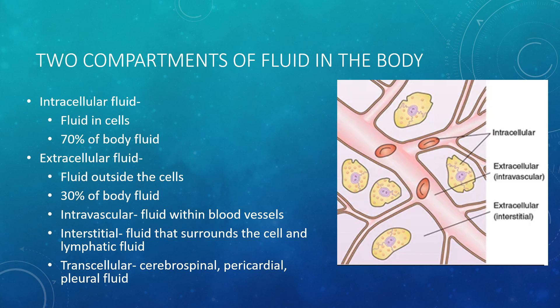Extracellular fluid is all the fluid outside of our cells and accounts for the other 30% of fluid. It can be broken down into three areas: intravascular fluid, or the fluid within our blood vessels; interstitial fluid, which surrounds tissue cells and includes our lymphatic system; and transcellular fluid, such as cerebrospinal fluid, pericardial fluid, pleural fluid, and intraocular fluids. Changes in extracellular fluid can alter blood pressure and cause swelling or edema. In a normal healthy person, all of these fluids are balanced — this is called homeostasis.